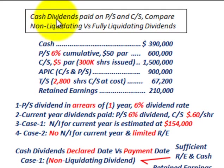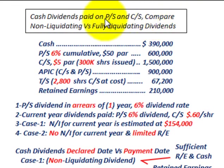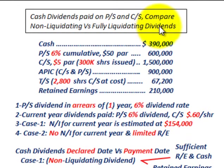What we're going to be going over here are cash dividends paid on preferred stock and common stock. We're going to compare a non-liquidating versus a fully liquidating dividend when we pay these cash dividends on these stocks.